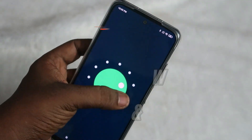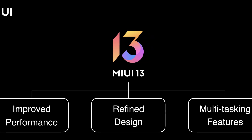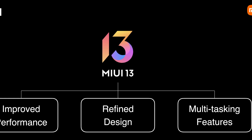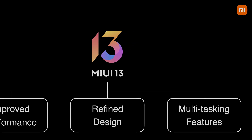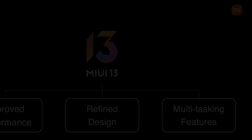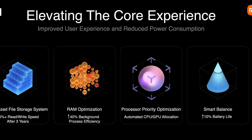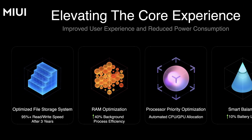In MIUI 13, there are 3 main areas of improvement: performance improvements, design changes, and multitasking features. There are also performance improvements in Xiaomi, including file storage system optimizations.